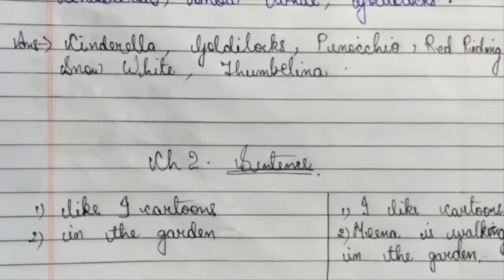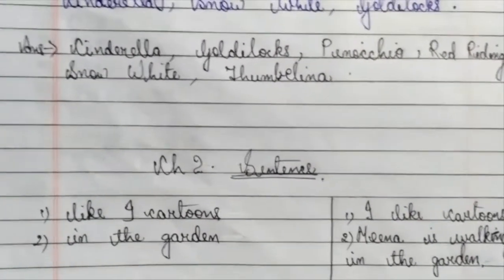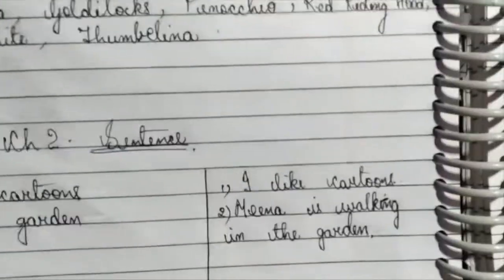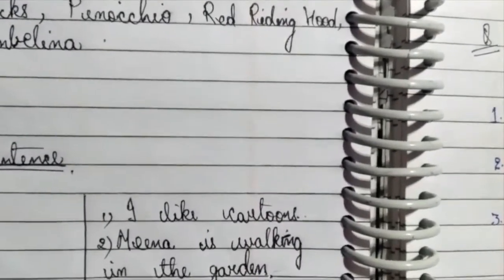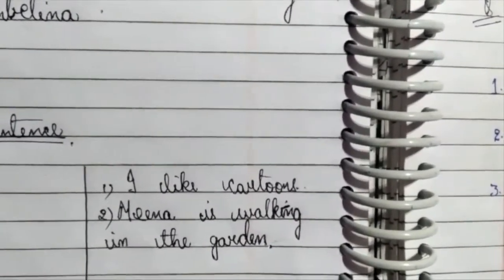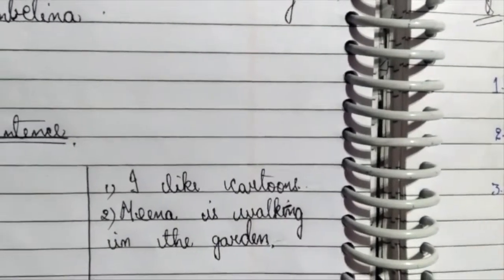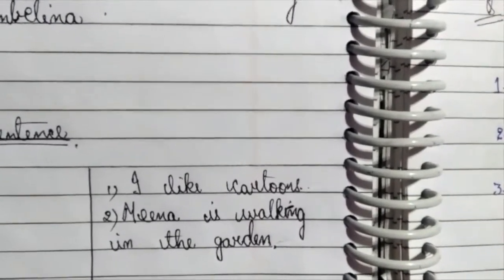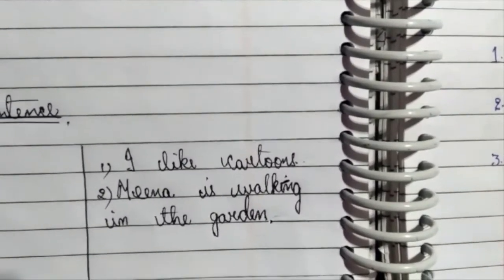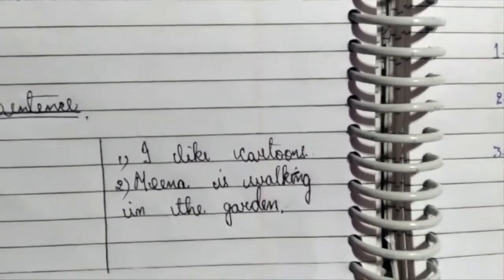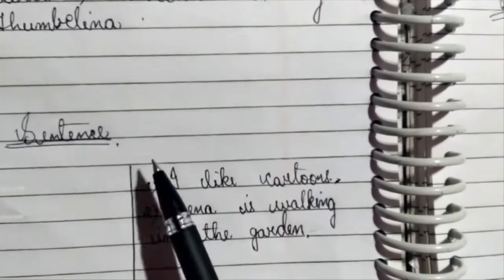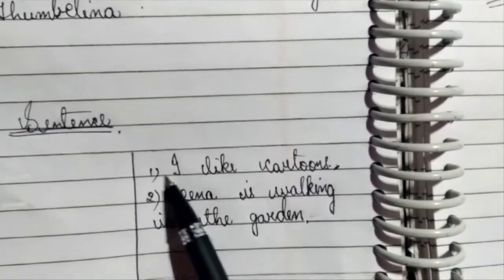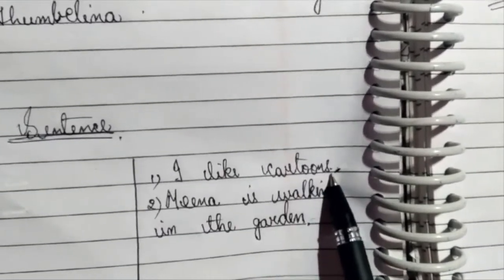It could be plants in the garden or trees in the garden, but it is not complete. Now if we look into the next sentences, it's 'I like cartoons' and 'Mina is walking in the garden.' Both sentences make a full, complete meaning and give a proper sense. And they consist of a group of words — 'I' is one word, 'like' is the second word, and 'cartoons' is the third word. So it consists of a group of words and it truly makes complete sense.